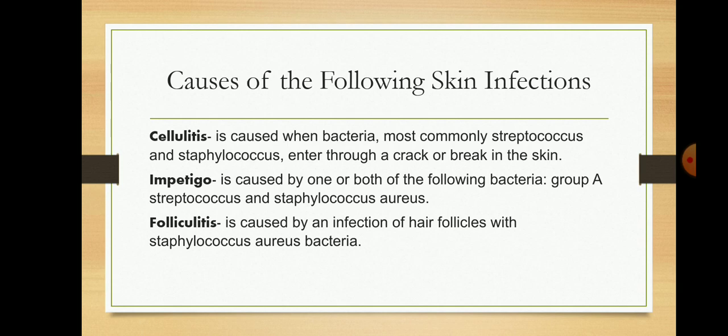The causes of the following skin infections: cellulitis is caused when bacteria, most commonly Streptococcus or Staphylococcus, enter through a crack or break in the skin. Impetigo is caused by one or both of the following bacteria: Group A Streptococcus and Staphylococcus aureus. Folliculitis is caused by an infection of hair follicles with Staphylococcus aureus bacteria.